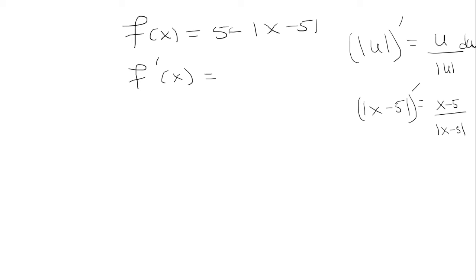But then we have a negative outside, so that's going to be negative quantity x minus 5 over absolute value of x minus 5. And so this is my derivative.